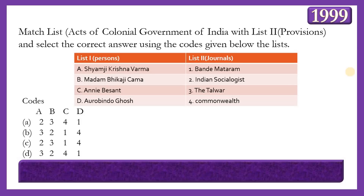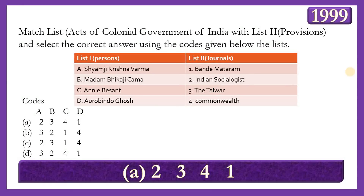Next matching question: Match Acts of the Colonial Government with provisions. List 1: Shyamji Krishna Verma, Madame Bhikarji Cama, Annie Besant, Aurobindo Ghosh. List 2: Vande Mataram, Indian Sociologist, Talwar, Commonwealth. The correct answer is option A — 2, 3, 4, 1 — meaning Shyamji Krishna Verma published Indian Sociologist; Madame Bhikarji Cama published Talwar; Annie Besant published Commonwealth; and Aurobindo Ghosh published Vande Mataram.